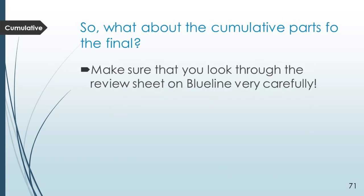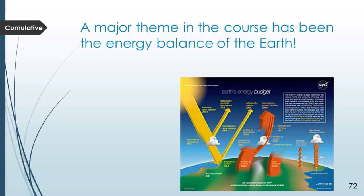That gets us through the new material on the final exam for Module 4. But there is definitely a cumulative aspect to the final too. I want you to take the time to look through the Blue Line review sheet very carefully. A lot of that material is easy to write multiple-choice or true-false questions from. One clearly major theme in the course has been the energy balance of the Earth — that's what the whole second module was about, and really the modeling and this last module has been about this as well. It would be perfectly reasonable for me to ask you to label the different features of an energy balance diagram — reflection of shortwave radiation, emission of longwave radiation, reflection off clouds, absorption, etc.